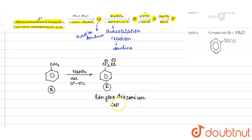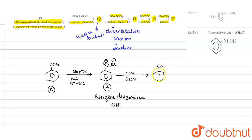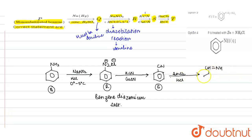R (benzene diazonium salt) is reacting with KCN in the presence of CuCN. Here, CN⁻ will be the nucleophile, removing the N₂Cl group and attaching to the benzene ring. So S will be cyanobenzene. Further, S reacts with SnCl₂ plus HCl — this reagent mixture is a weak reducing agent — so partial reduction happens, not full reduction. This gives compound T.